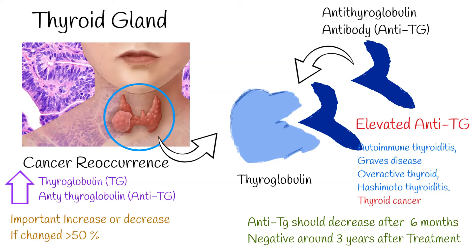To summarize: if antithyroglobulin is elevated, additional studies are required to assess thyroid function and structure. If antithyroglobulin is used for observation of cancer recurrence and there is an important elevation, additional imaging studies are required.